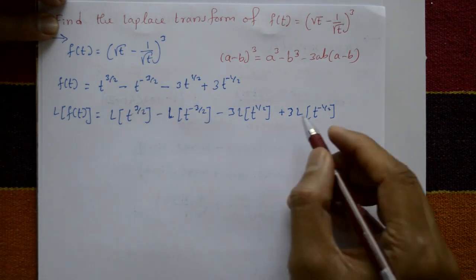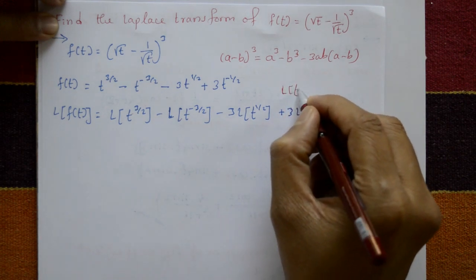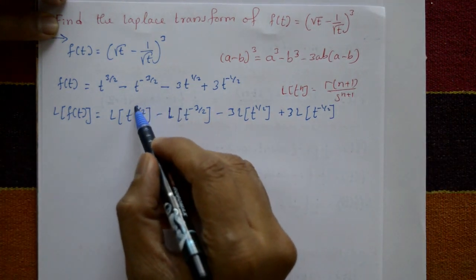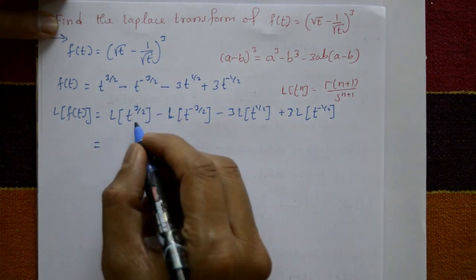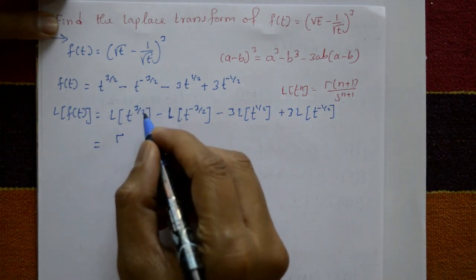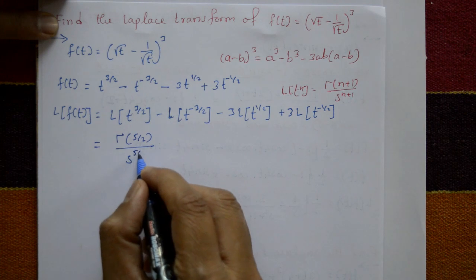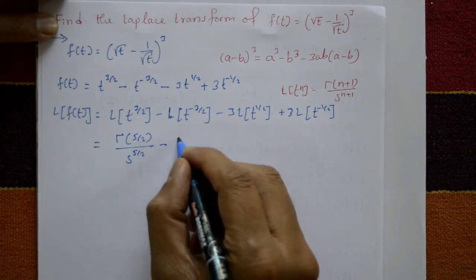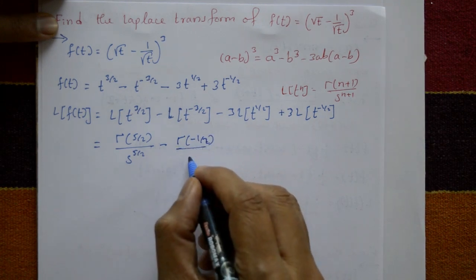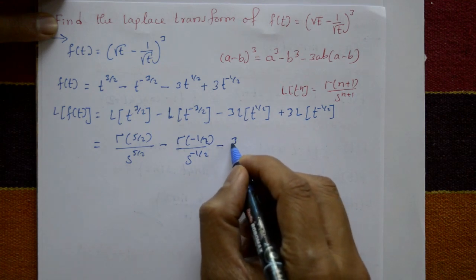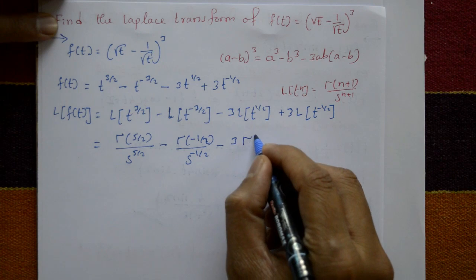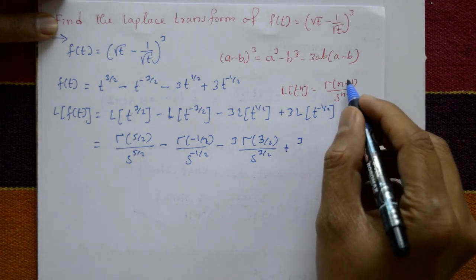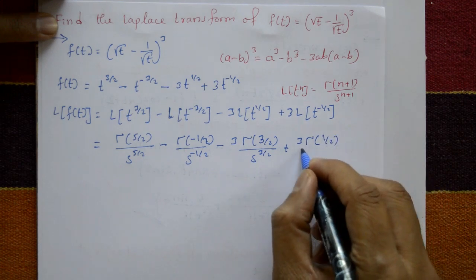Using the standard formula: L{t^n} = Γ(n+1) / s^(n+1), where n is a constant (not necessarily an integer). Applying this: L{t^(3/2)} = Γ(5/2)/s^(5/2), L{t^(-3/2)} = Γ(-1/2)/s^(-1/2), L{t^(1/2)} = Γ(3/2)/s^(3/2), and L{t^(-1/2)} = Γ(1/2)/s^(1/2).